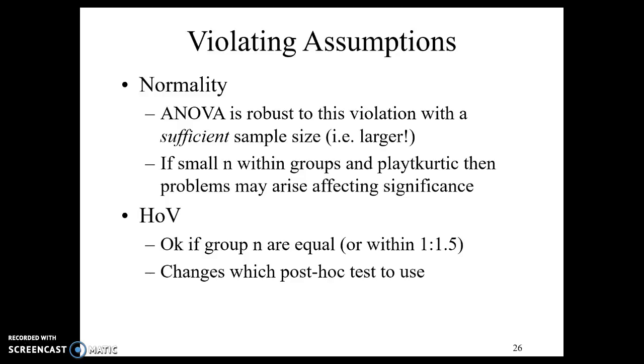If we violate homogeneity of variance, this is okay if our sample sizes are equal. So if group A, B, and C are basically all 20, then that's good. Or if one is 15 and one is 20 and one is 22, then we're okay with that too. As long as the groups are within 1 to 1.5 ratio, then we consider them equal or equal enough. What this does is if we violate homogeneity of variance, it changes which post-hoc tests that we will use.